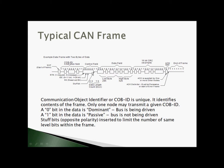The frame includes a control field indicating the number of data bytes to be sent, then the data itself, followed by a CRC. Finally, there's an acknowledge slot. The acknowledge slot means you need to have at least two nodes on a bus for CAN to work, because at least one other node must acknowledge the data frame or it will be resent. There's also the end of frame — a quiet time between packets to allow synchronization if a new node were to come on within an already active system.